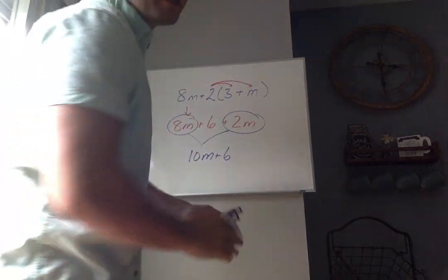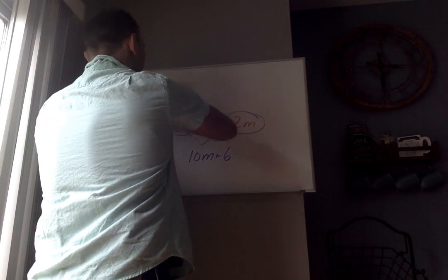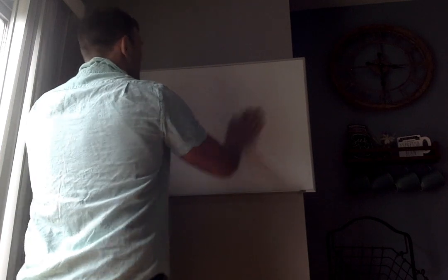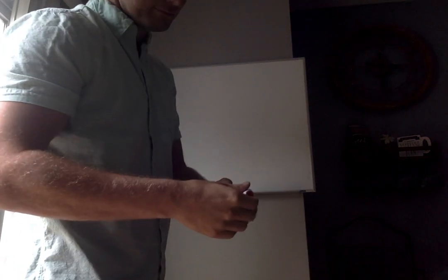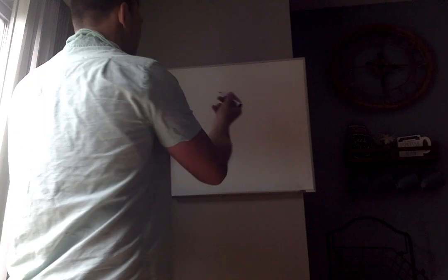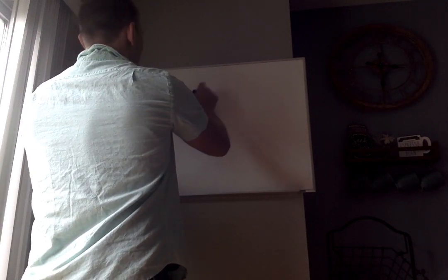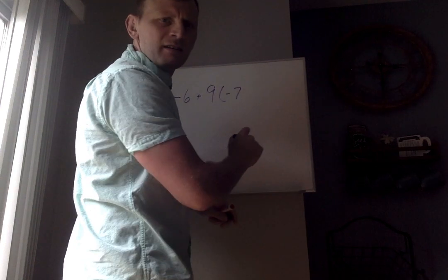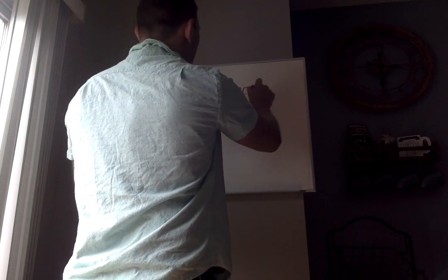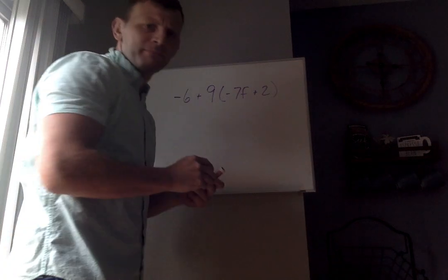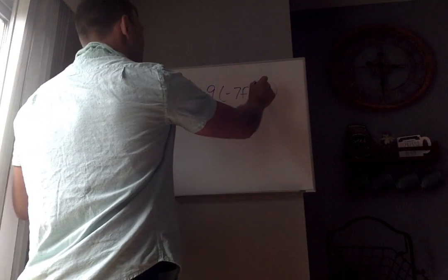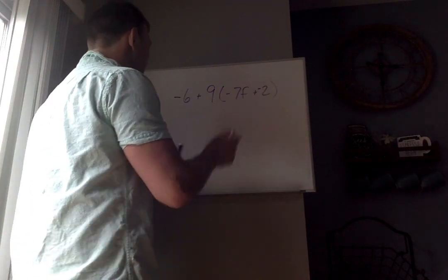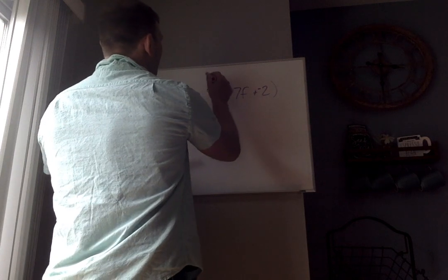Okay, one last one. I'm going to let you guys do this on your own. This one says negative 6 plus 9 times negative 7f plus 2. Sorry, negative 2. So now what I'm going to do is I'm going to distribute this 9 into everything here.